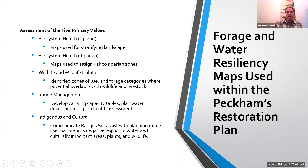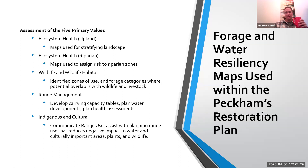By listing the range values on the landscape, there's a lot of overlap with other values within land use plans. The primary values include upland health, ecosystem health in terms of riparian zones and riparian management, wildlife habitat, identifying zones of use with livestock, developing carrying capacities, planning water developments, planning range health assessments, and communicating range use with other land users, as well as indigenous and cultural values around where planning might overlap with water, culturally important plants, or wildlife.